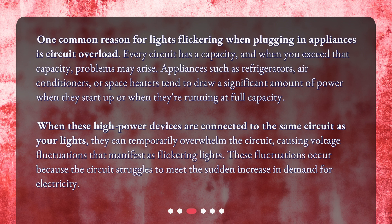When these high-power devices are connected to the same circuit as your lights, they can temporarily overwhelm the circuit, causing voltage fluctuations that manifest as flickering lights. These fluctuations occur because the circuit struggles to meet the sudden increase in demand for electricity.